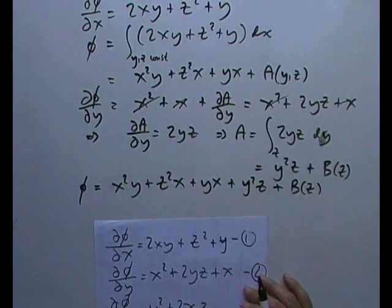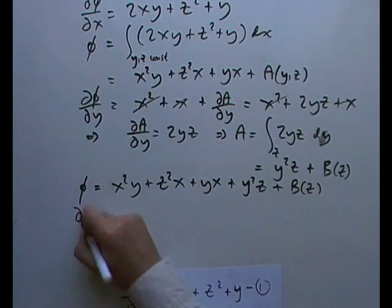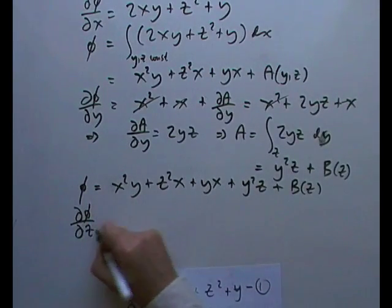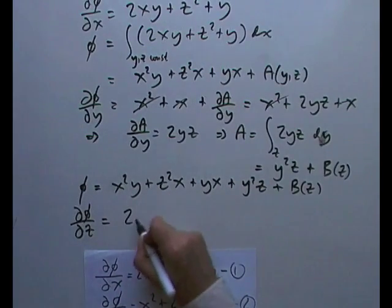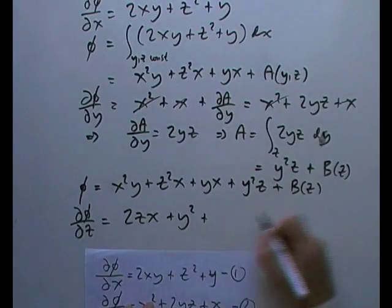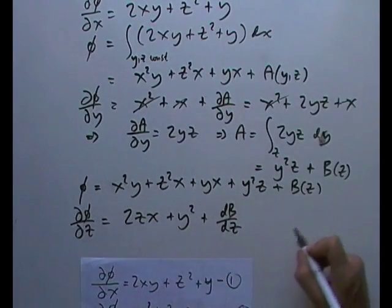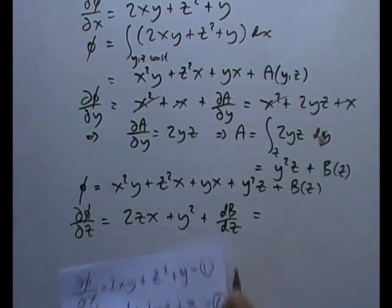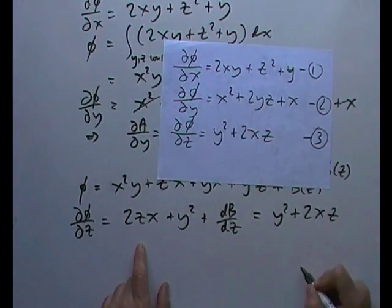Now go to the third one. If you differentiate that with respect to z, I should end up with this expression. So partial phi by partial z would be, now involving z I've only got this term here, that's a 2zx, and this term here, that's a y squared, plus the derivative of b with respect to z. It's the only variable that's left in there now. And that should equal y squared plus 2xz.